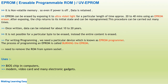Now let's see EPROM — Erasable Programmable Read-Only Memory, also called UV-EPROM. This non-volatile EPROM can be erased by exposing ultraviolet light on it for a duration of 20 to 40 minutes using an EPROM eraser. Once the data is erased, you can reprogram the EPROM — meaning you can store data inside it again.